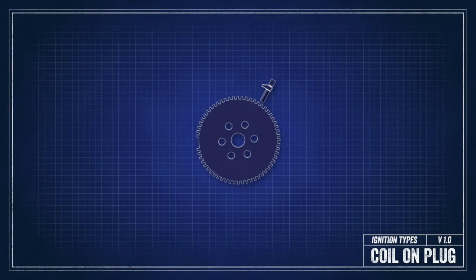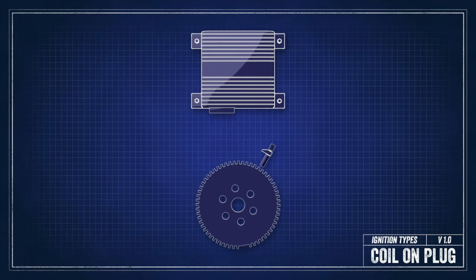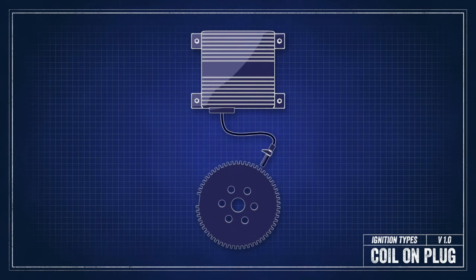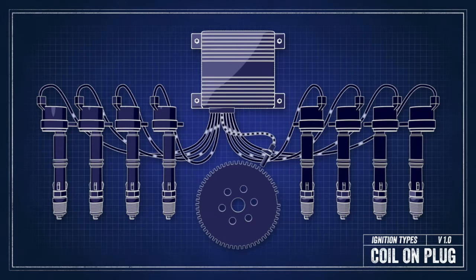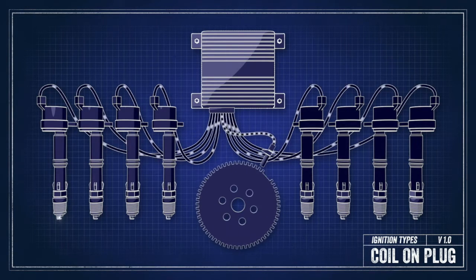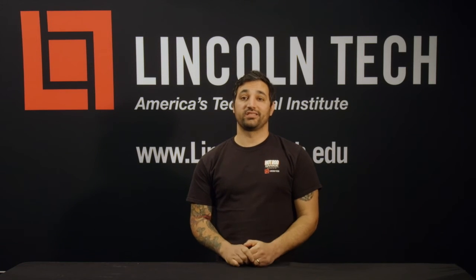The final system we're going to talk about is a distributorless coil on plug system. This is the most advanced system on the market today. Like other distributorless systems, the engine computer or EMS will use a combination of camshaft and crankshaft sensors to input the engine RPM speed and the position of the engine in its cycle. But instead of firing one coil per two cylinders, the COP or coil on plug system fires one coil per cylinder. These are usually mounted into the valve cover, giving a very tidy installation and giving the EMS total control over the timing curve.